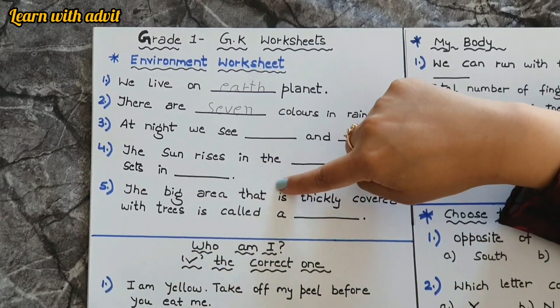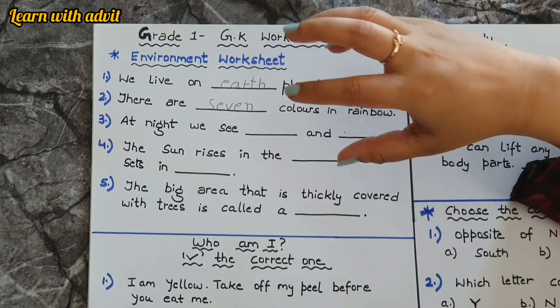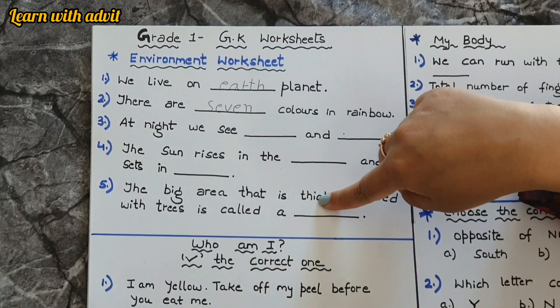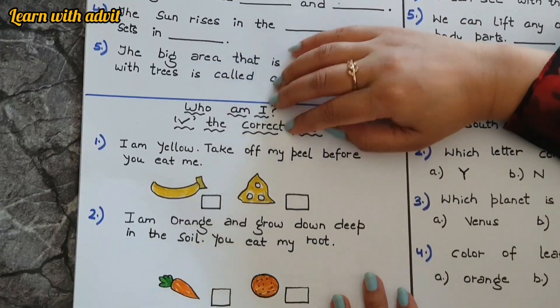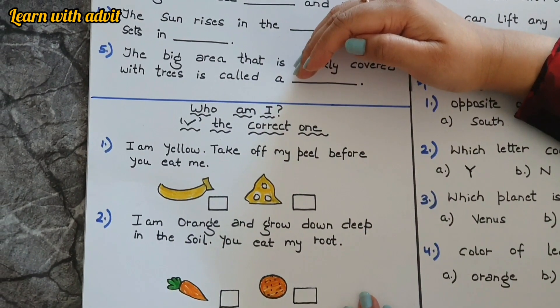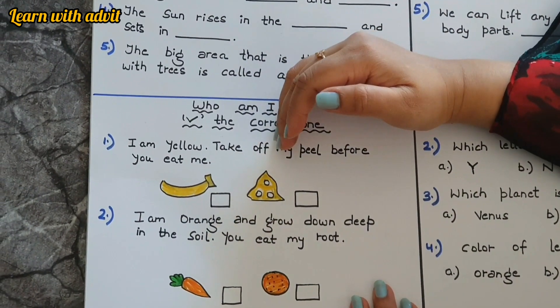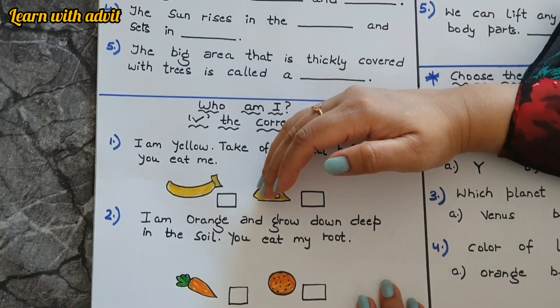The big area that is thickly covered with lots of trees is called a forest. Very good. And here are some guessing questions. Who am I? Here are some clues you have to guess which is the correct one.